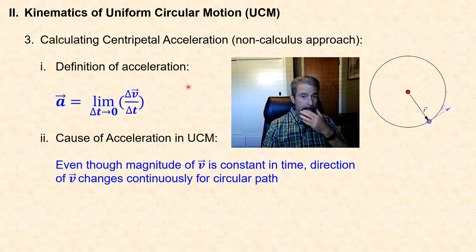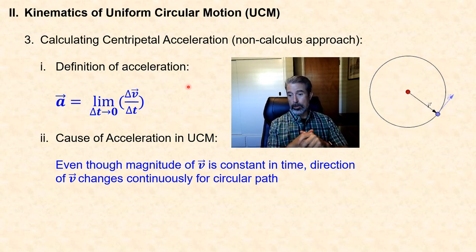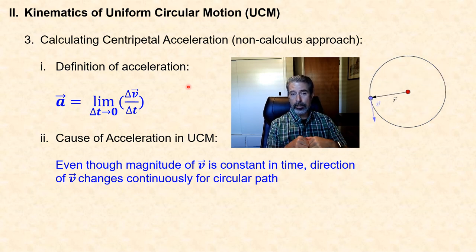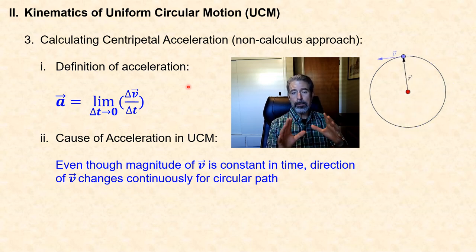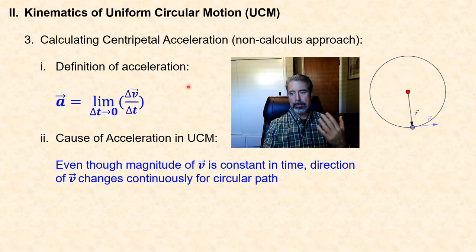Later on we will see that velocity can change for two reasons: because its direction changes and because its magnitude changes. That will be the more general case of circular motion we'll consider at the end. But for now, when we talk about centripetal acceleration, we're talking about the acceleration that results strictly because the direction of the velocity changes, as opposed to the magnitude or speed changing.